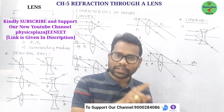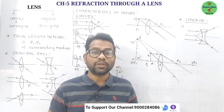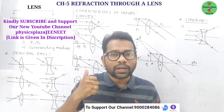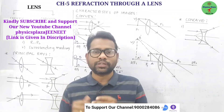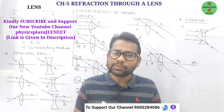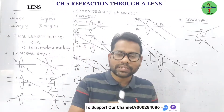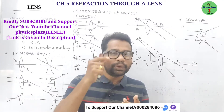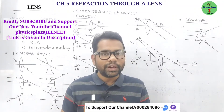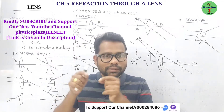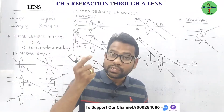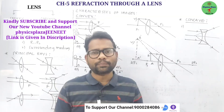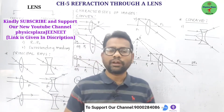There are two types of lenses: convex lens and concave lens. A convex lens is also called a converging lens, whereas a concave lens is also called a diverging lens. The main difference is that a convex lens is thick in the middle and thin at the periphery, whereas a concave lens is thin in the middle and thick at the edges.